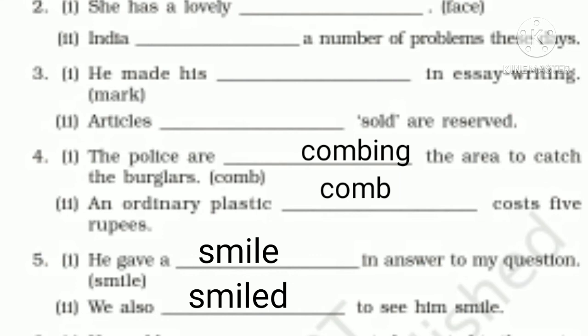Fifth sentence: 'He gave a dash in answer to my question.' The word given is 'smile,' used as a noun, so we write 'smile.' In the next sentence, 'We also dashed to see him,' it will be 'smiled,' used as a verb.